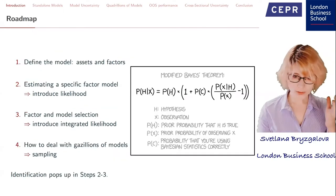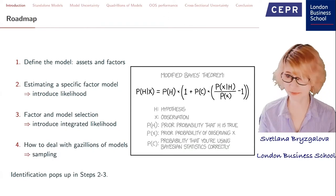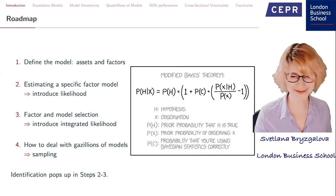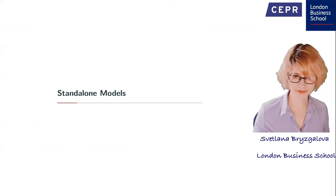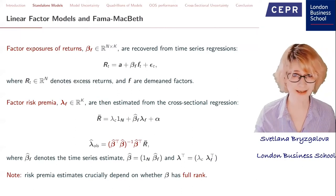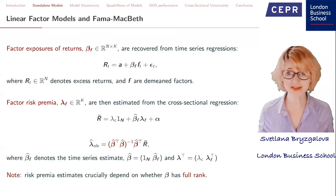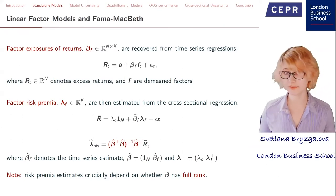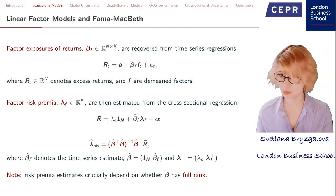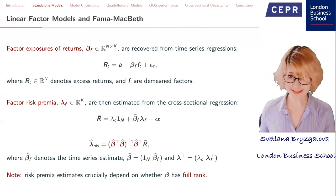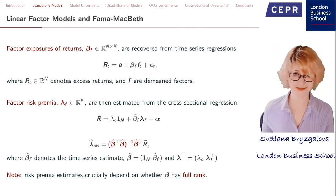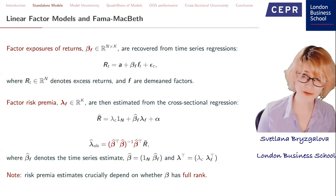I'll start with estimation of standalone models, then move to factor selection, model selection, and what we learn from running a gazillion models. In a standard linear factor model, the goal is to explain the cross-sectional spread in expected returns on a set of securities or portfolios by exposure to risk factors. This implies the familiar two-step procedure: in the first stage, we regress asset returns on factors F to measure betas; in the second stage, we check whether expected returns line up with those betas. If the slope in the cross-sectional regression differs from zero, the factor is priced.